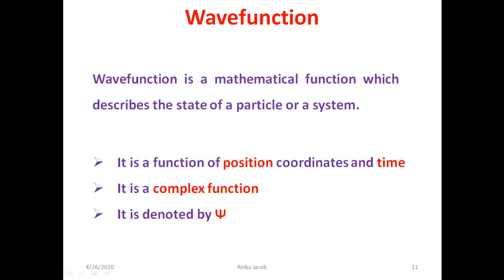Next we discuss the wave function. In quantum mechanics, the wave function is a mathematical function which describes the state of a particle or a system. As the particle is treated as a wave, the motion of the particle is seen as the motion of the wave. In order to study the propagation of this wave, we use a mathematical function whose variables are position and time. The wave function should be a function of position coordinates and time, it should be a complex function, and it is denoted by psi.